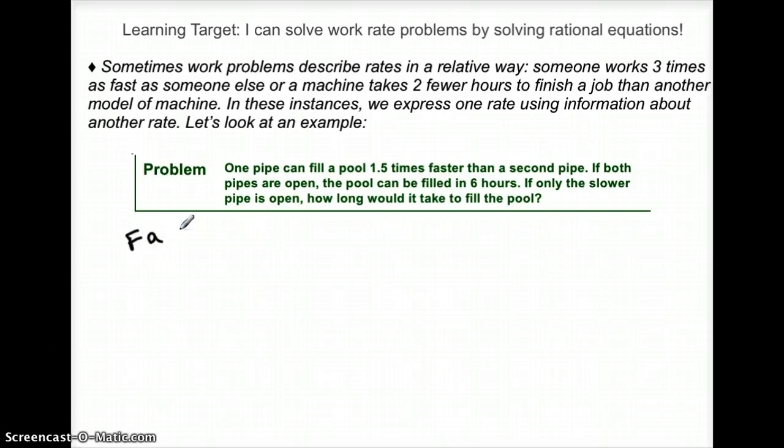So as far as people, we don't have people that we can identify with initials and figure out their work rates. But I do have two pipes. I've got a fast pipe and I've got a slow pipe.